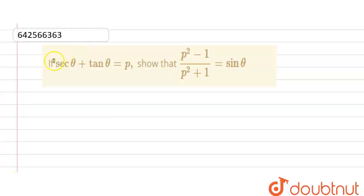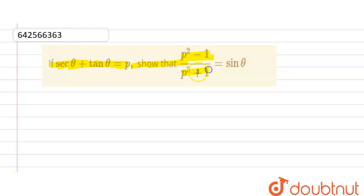So guys, if sec θ + tan θ is equal to p, then show that (p² - 1) / (p² + 1) is equal to sin θ.